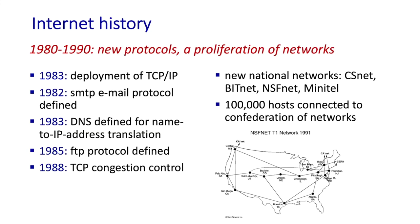In the 1980s there were also a number of new computer networks created to link universities together. There was a network called BITNET that provided email and file transfers among universities in the northeast. There was a network called CSNET, the Computer Science Network, formed to link university researchers who didn't have access to ARPANET. And in 1986, the National Science Foundation created NSFnet to provide access to NSF-sponsored supercomputing centers.